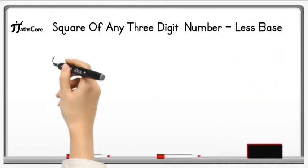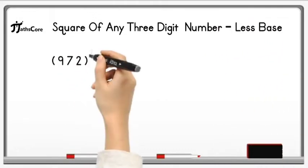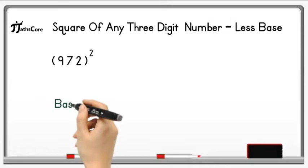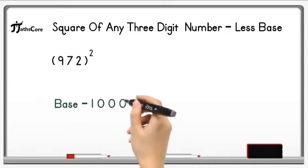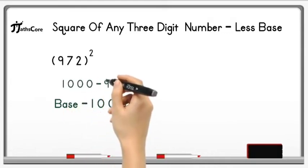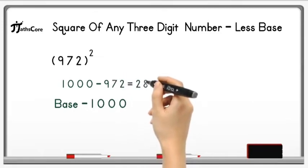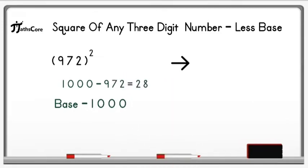Let's take one more example on it. Example is 972 square. For 972 base is 1000. So first of all subtract 972 from 1000. 1000 minus 972 is equal to 28.